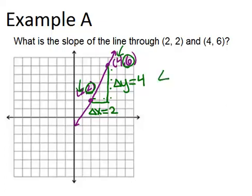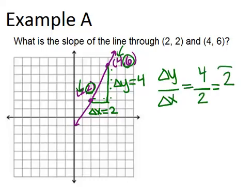So that means our slope, delta y over delta x, equals 4 over 2, which is 2. So the slope of the line is 2.